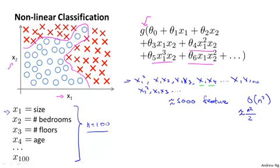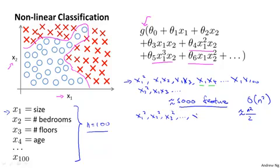Including all the quadratic features doesn't seem like a good idea, because that's a lot of features and you might end up overfitting the training set. It can also be computationally expensive to be working with that many features. One thing you could do is include only a subset of these — for example, only the features x1 squared, x2 squared, x3 squared, up to x100 squared — and then the number of features is much smaller, only about 100 such quadratic features.